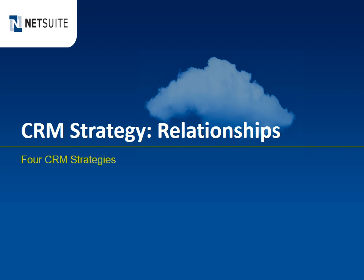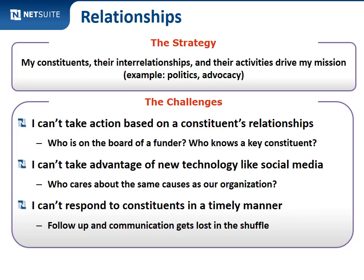Moving on to the relationship strategy. These strategies build upon one another, so you might need both contacts and relationships — usually you need all these things once you get to higher levels. The relationship strategy is: I need to know about my constituents, their interrelationships, and their activities that drive my mission. The best example for this strategy is really the politics and advocacy space, where whom you know and whom the people you know know are incredibly important to your mission.